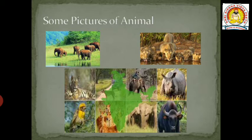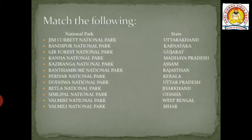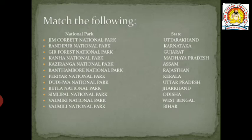Now in your textbook the following was given, and here the respective answers are given side by side. Jim Corbett National Park is found in Uttarakhand, Bandipur National Park in Kerala, Dudhwa National Park in Uttar Pradesh, Betla National Park in Jharkhand, Simlipal National Park in Odisha.